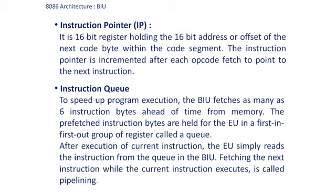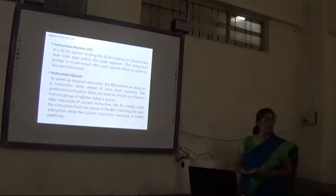The instruction queue speeds up program execution. The BIU fetches as many as 6 instruction bytes ahead of time from memory — 6 bytes for the 8086 and 4 bytes for the 8088. These pre-fetched instruction bytes are stored in a first-in, first-out queue for the execution unit. After the execution unit finishes the current instruction, it simply reads the next instruction from the queue while the BIU simultaneously fetches further instructions. This overlap is called pipelining.